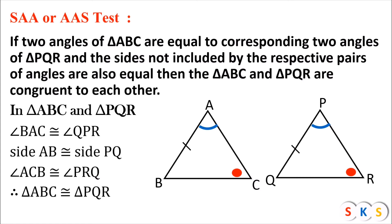You can see that two angles of both triangles are congruent to each other, and one side which is not between those two angles is also congruent. Therefore, triangle ABC and triangle PQR are congruent by the SAA or AAS test.